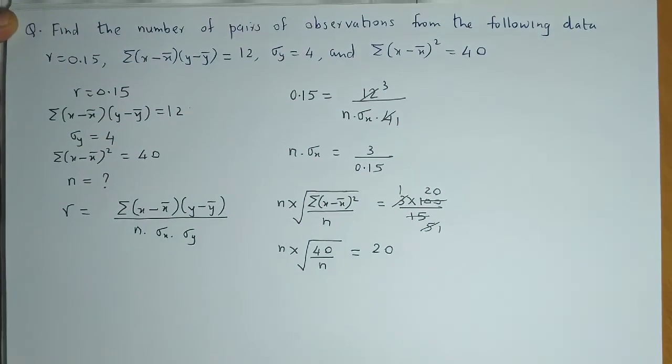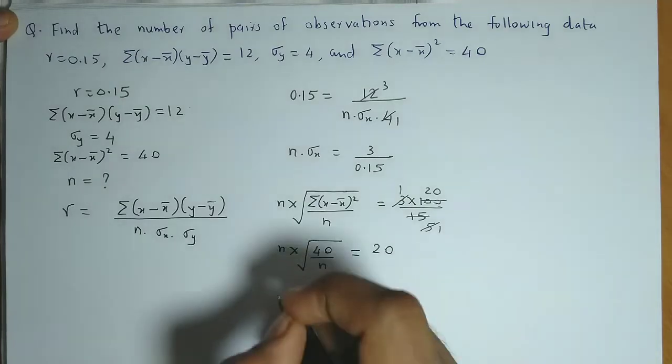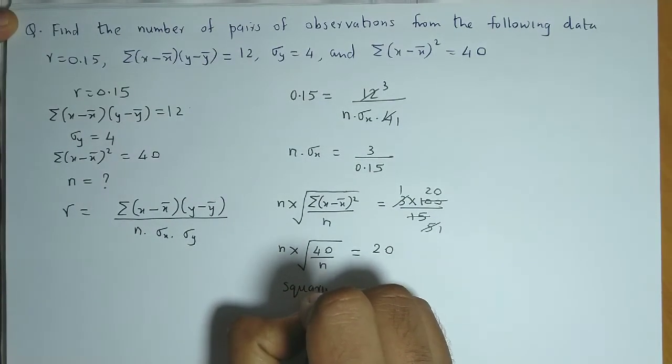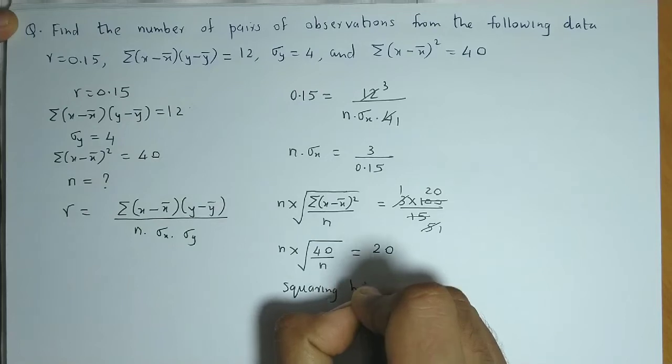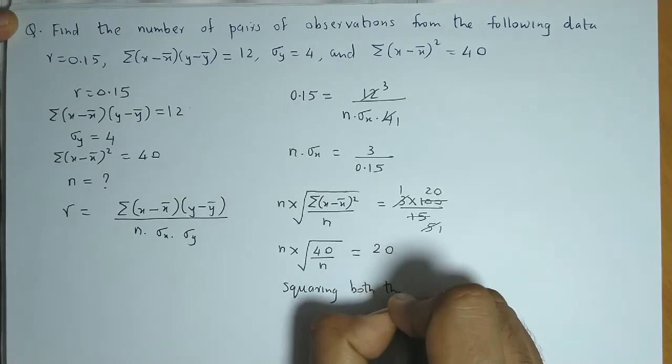So finally to remove the square root we square both the sides. So the next step is squaring both the sides.